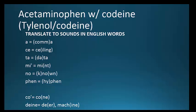Translation. A as in comma. C as in ceiling. Ta as in data. Mi as in mint. No as in known. Fen as in hyphen. Co as in cone. Deen as in deer, machine.